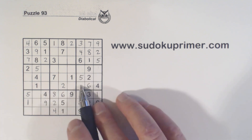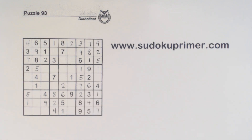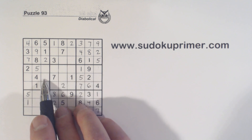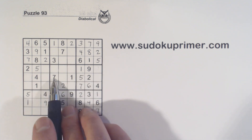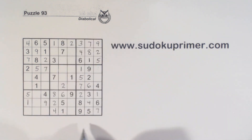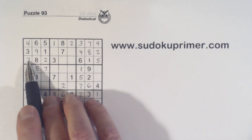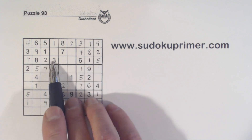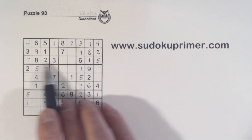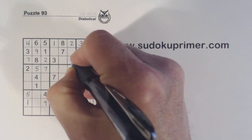We've got a one there, so we can put in the one and the seven. We've got a seven there and a seven there, so we know that's a seven. Row three is only missing two numbers: four and nine. There's a nine there, so we can finish those.